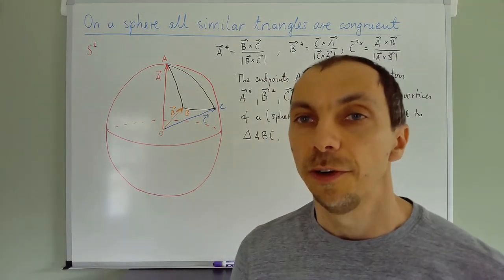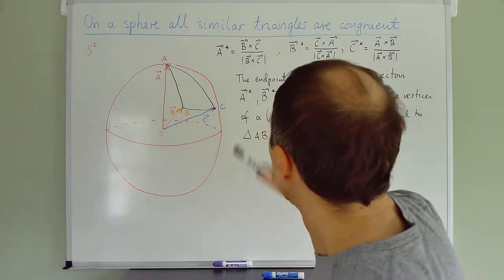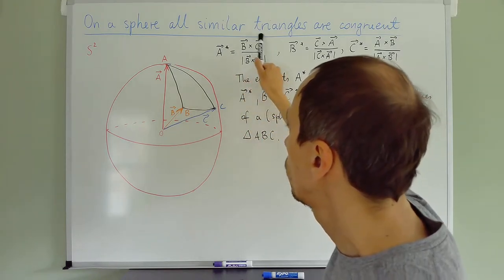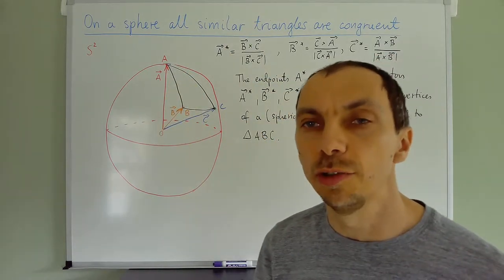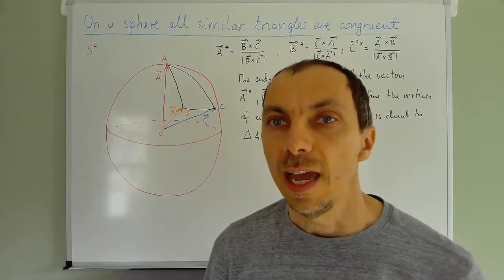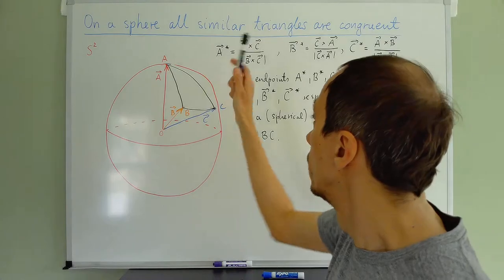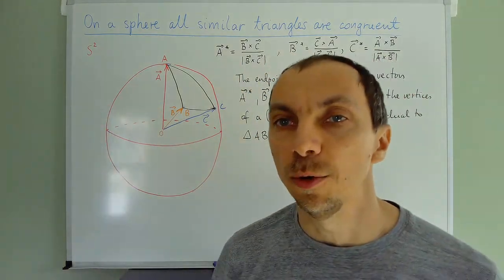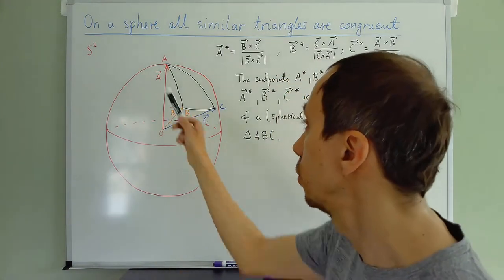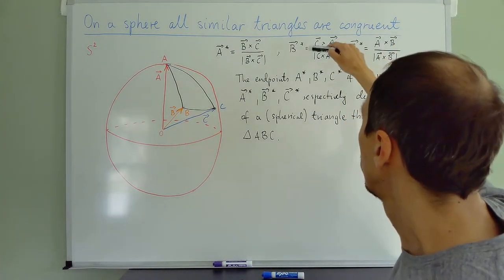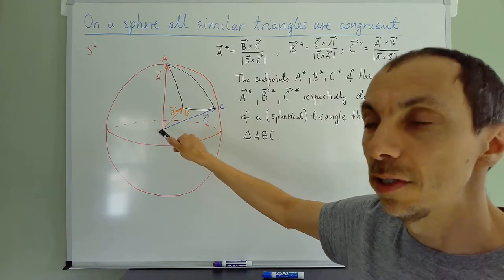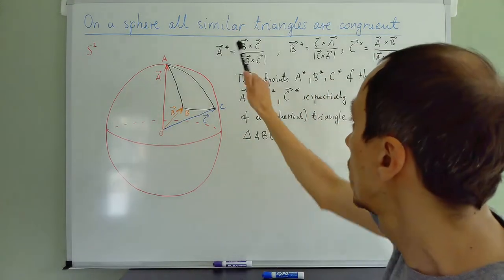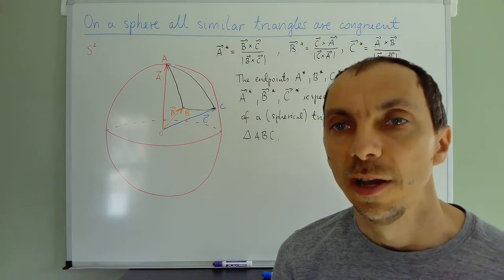Then I define the vertices of the dual triangle in the following way. The vertex A* is given by taking the cross product between the vectors B and C, and then dividing by the length so I get a unit vector. The vector A* originates at the center of the sphere, and because its length is one, its endpoint must lie somewhere on the sphere — so it gives you a point on the sphere. Same with the other two: each of them are unit length vectors originating at the center of the sphere, so they end up with endpoints on the sphere. This gives us three different points on the sphere, called the vertices of a dual triangle.